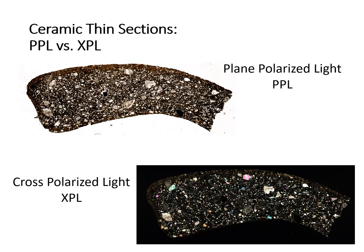This is what an entire ceramic rim sherd looks like in thin section. On the top, you can see the entire sample in plain polarized light, and on the bottom, you can see the sample in cross polarized light. In most cases, however, we are viewing a much smaller section of the ceramic underneath the microscope.